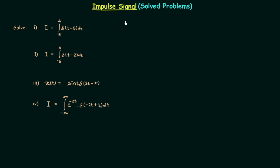In the previous two lectures we have seen different properties of the impulse signal. Now in this lecture we will use those properties to solve four problems you can see on your screen.